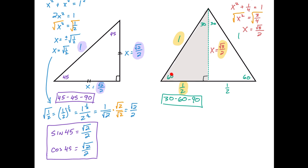Over here, from our 60-degree angle, if I want to look at this angle, then sine of 60 is √3/2 over 1, so that equals √3/2. Cosine of 60 is going to equal...